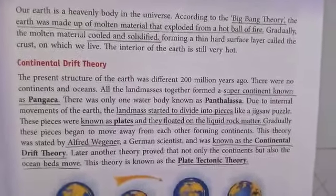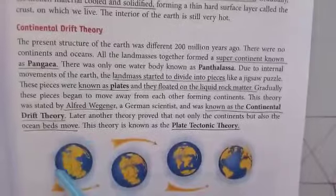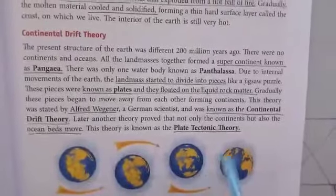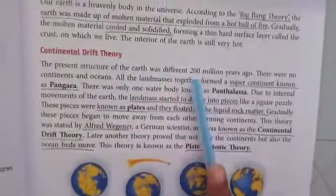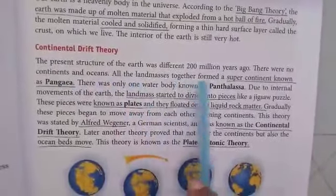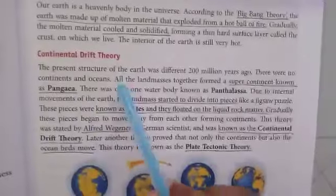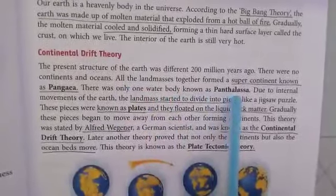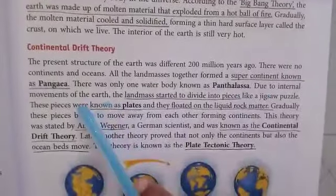There is another theory called the Continental Drift Theory, which tells us how the earth's land mass was divided and formed the continents. It states that the present structure of the earth was different 200 million years ago — there were no separate continents and oceans. All land masses together formed a super continent known as Pangaea, and there was only one water body known as Panthalassa.